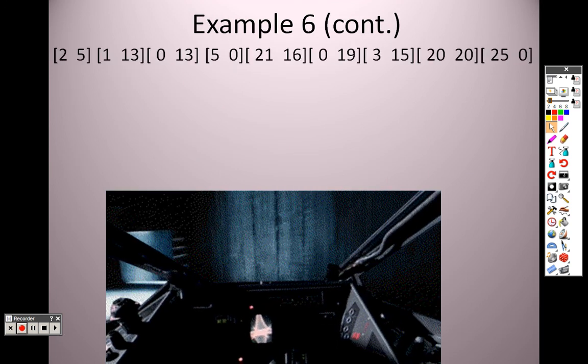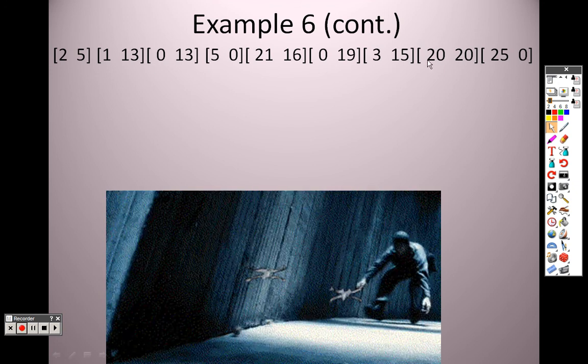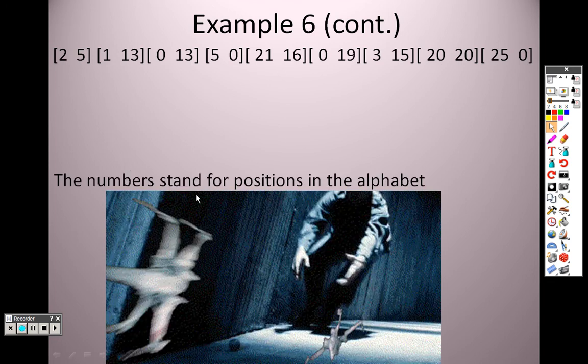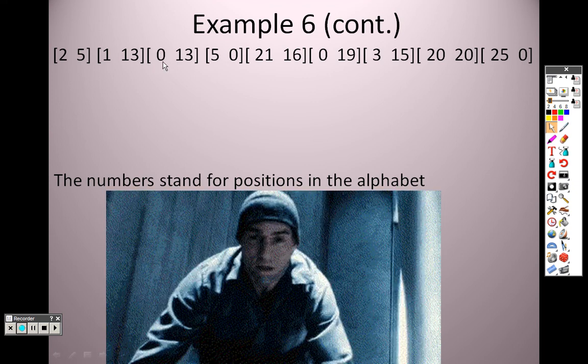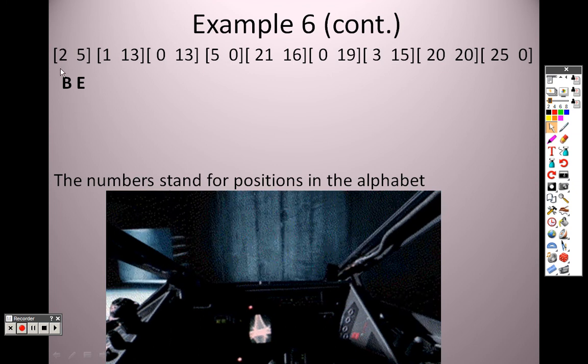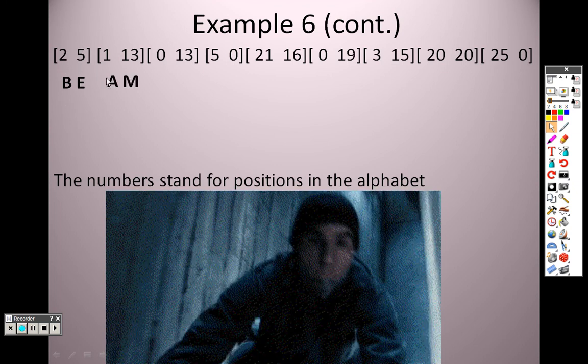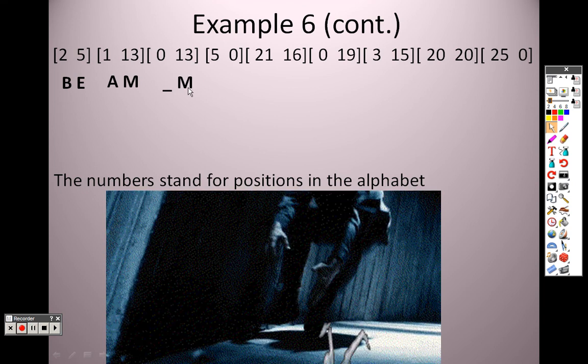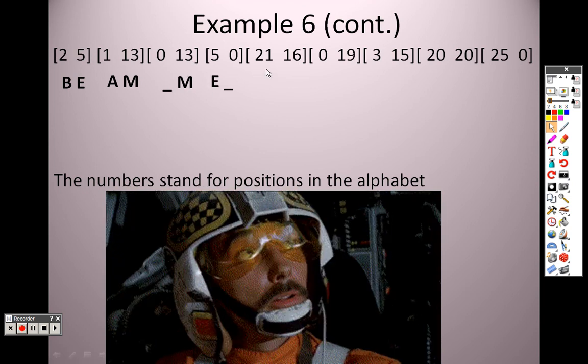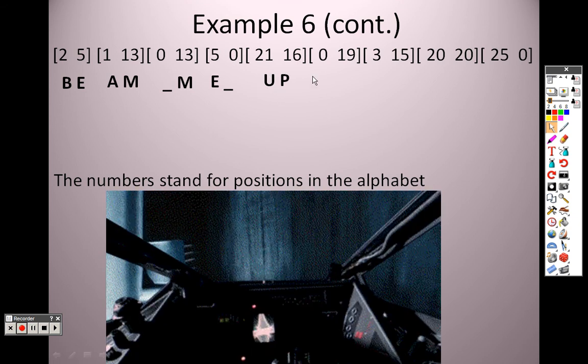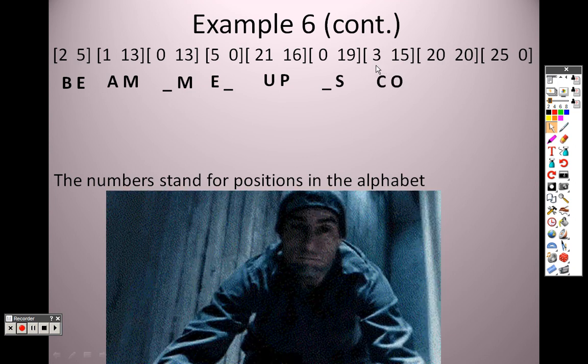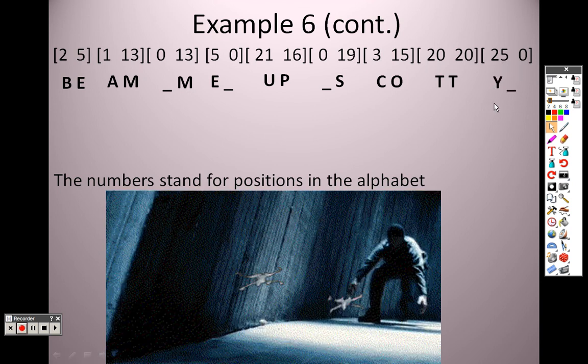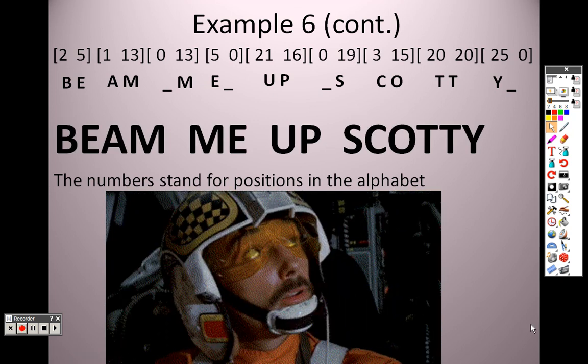But anyway, that's all the answers that I got. Notice I put all the answers in a row. Well, this is what you need to keep in mind. The numbers actually stand for positions in the alphabet. And zero stands for a space. So two is the second letter, E is the fifth letter. One is the first letter, the thirteenth letter is M. Zero stands for space. Thirteen is M, five is E, there's a space. Twenty-one is U, sixteen is P. Zero is space, nineteen is S. Three is C, fifteen is O, twenty is T, and Y is twenty-five. So really when you put us all together it says Beam me up, Scotty, is your answer.